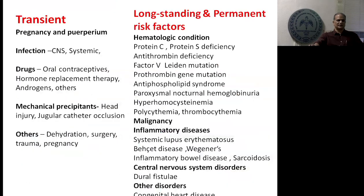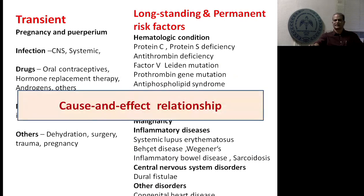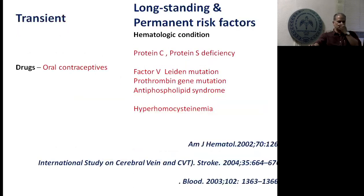The etiology can be divided into transient and permanent risk factors. The things which stand out most are oral contraceptive and hormonal use — a very important and preventable risk. There are other permanent risk factors detectable only by blood tests: protein C and protein S deficiency, and genetic mutations like factor V Leiden, prothrombin gene mutation, antiphospholipid syndrome, and hyperhomocysteinemia.